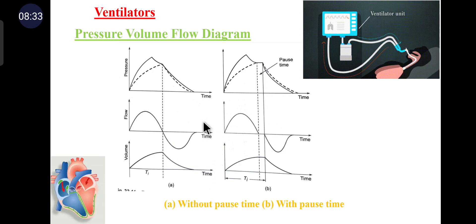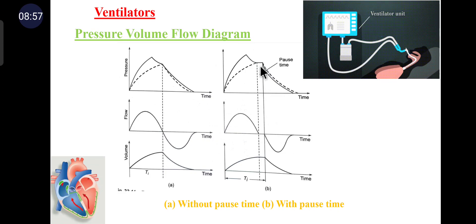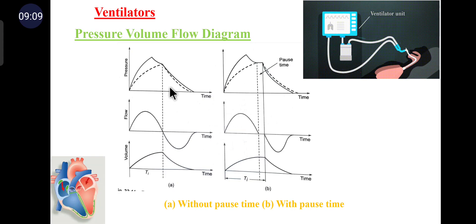The pressure-volume diagram is discussed here. It is necessary to provide a pause time between the cycling of the ventilator and the change from inspiratory flow to expiratory flow in the airway. During this pause time, the flow becomes zero when the alveolar pressure equals the airway pressure and a constant volume is maintained in the lungs. Ventilators producing a pause time during inspiration or expiration have certain advantages over ventilators without such a pause time, as shown in the pressure-flow diagrams with and without pause time.